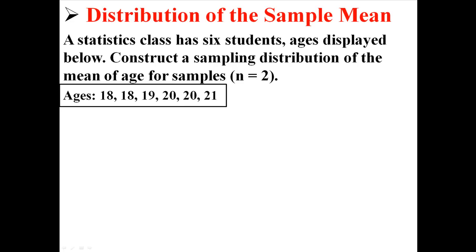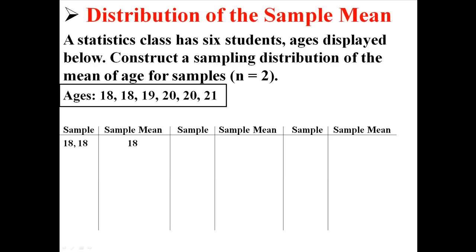Below I have 6 ages: 18, 18, 19, 20, 20, and 21. I want to take samples of size 2 from that. Realize that these 6 ages are our population — this class — and I want to take samples of size 2. I'm going to start taking samples of 2 until I've taken all possible samples, then find the mean of those samples, which in this case would be the mean of two numbers. Starting off with the pair of 18 and 18, that has a mean of 18.